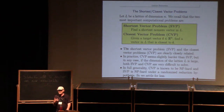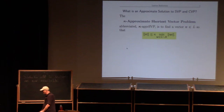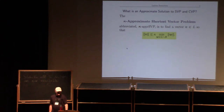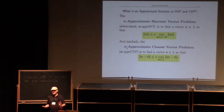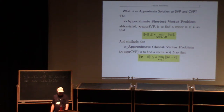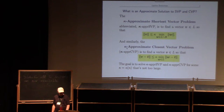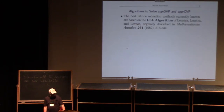They're both known to be hard problems in general, so we don't expect to be able to solve them exactly. We often want to solve them approximately. The κ-approximate shortest vector problem is not to find the shortest vector but to find a vector that's no more than κ times longer than the shortest vector. Similarly, the κ-approximate closest vector problem asks for a lattice point that's off by no more than a factor of κ. Ideally κ would be a small polynomial in the dimension, maybe like the square root of n.